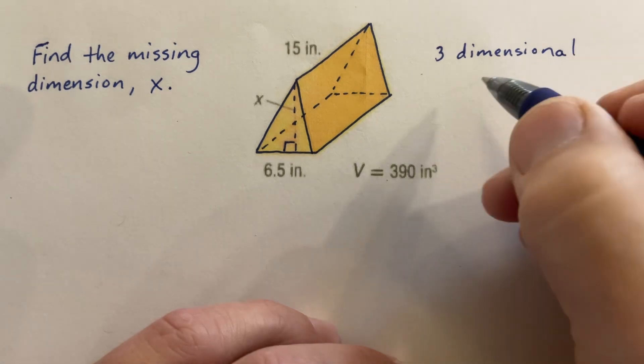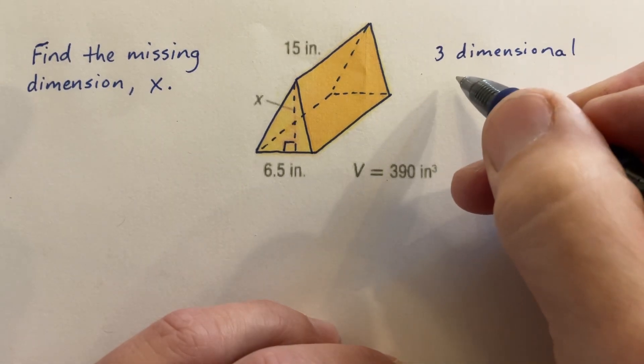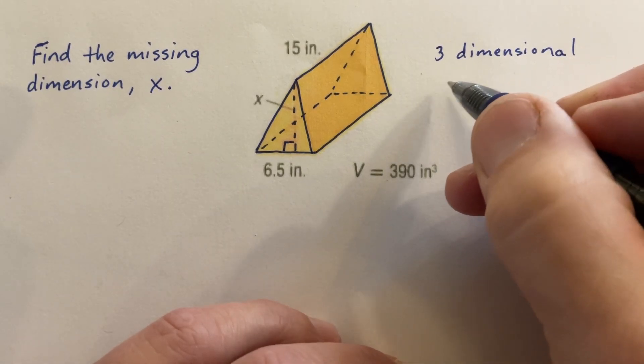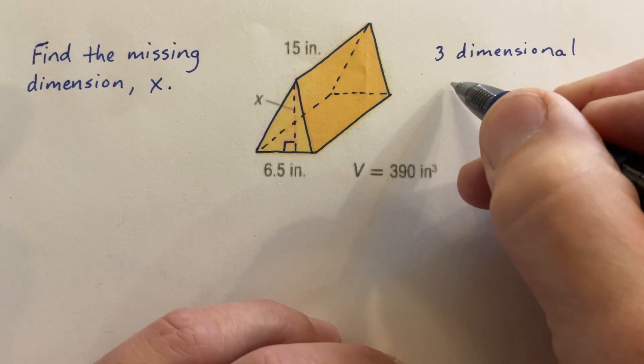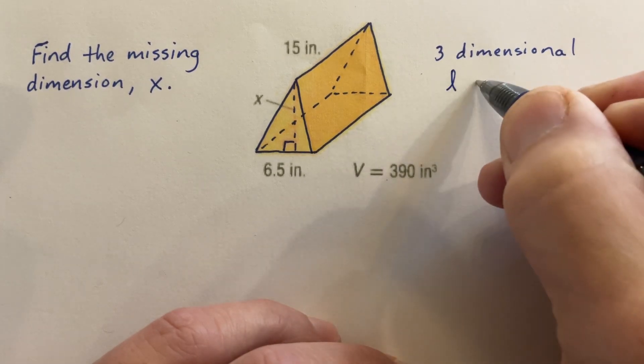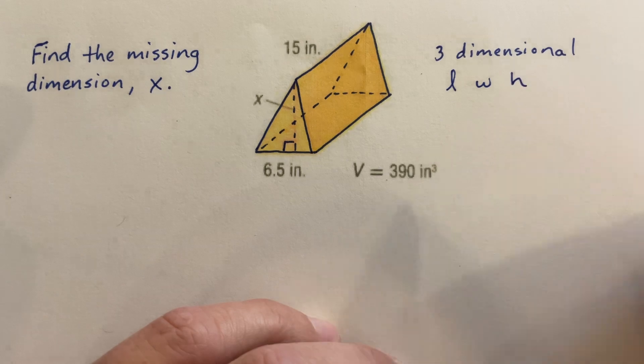Three-dimensional, and the three dimensions of a three-dimensional object are the length, the width, and the height.